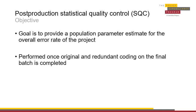Statistical quality control aims to provide a reliability rate for the overall dataset. By testing a new round of coding against the final coding of the dataset, a reliability rate for the entire dataset can be established. Datasets should aim to guarantee with 95% confidence that the overall error rate is 5% or below. Should the reliability rate be over 95%, the dataset can be published with confidence. A reliability rate of under 95% may necessitate additional statistical quality control to improve the accuracy of the dataset.